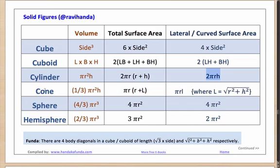The cone is a very similar figure. Its volume is one-third of the area of the base: (1/3)π R² H. The total surface area is π R² for the base plus π RL for the lateral surface area, where L is the slant height.